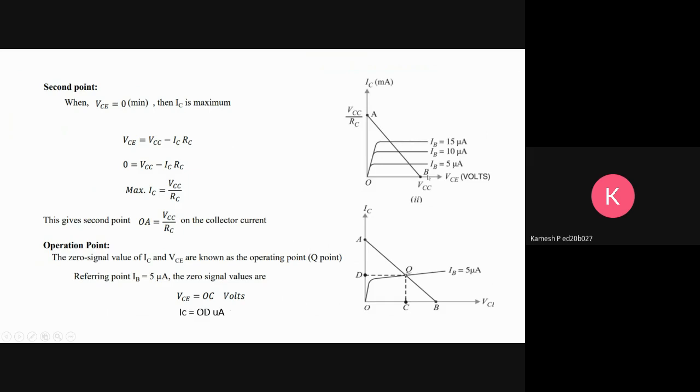You can get the two points of the line and a line equation. Then for the operating point, the Q point, is where this line as well as the required IB value—the constant IB value—meets. This is called the Q point, the operating point.